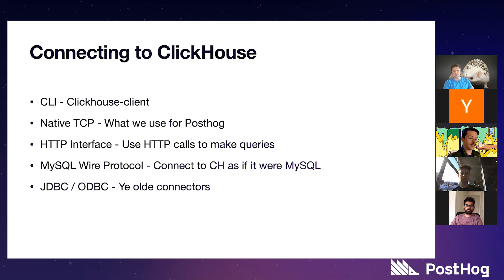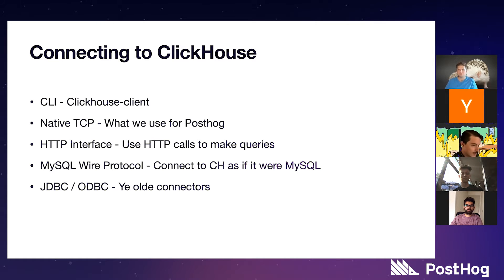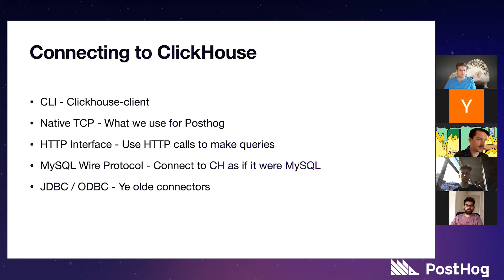Back to connecting: Native TCP is what we use for PostHog's client library. You also have an HTTP interface where you can POST a query. The nice thing about Native TCP is it gives you status back — so if we ever wanted to give a status bar in PostHog showing like 'your query is 80% done,' we could. It supports MySQL wire protocol, so you can query ClickHouse just like it was MySQL using a MySQL client, which is neat. And of course JDBC and ODBC — that's how we connect to it from Metabase.